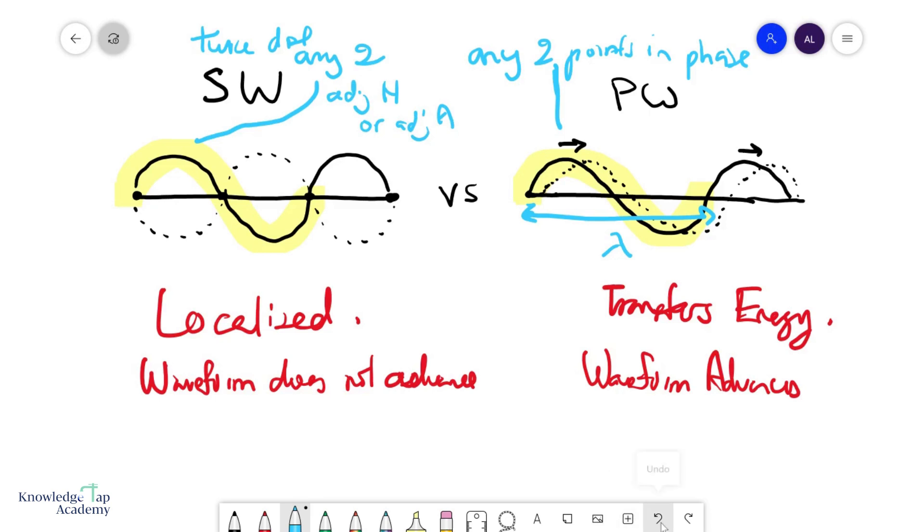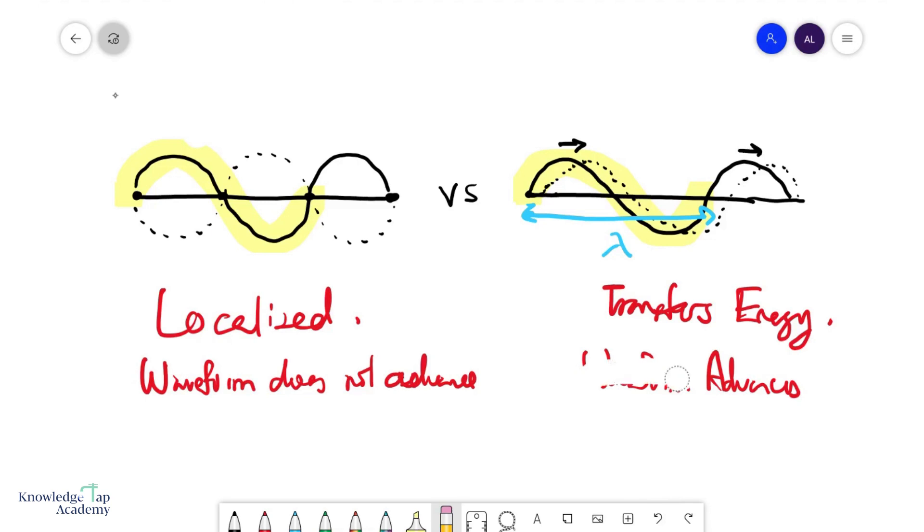We have three differences so far, and there are two more which are quite interesting, so we shall look at them. Let me just erase this first so that's a little bit easier to see. Another way to describe the difference is to look at the amplitude of the particles on the wave.